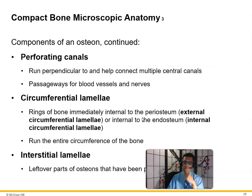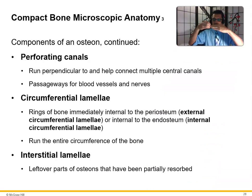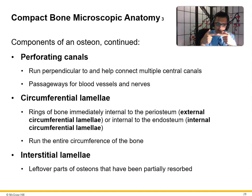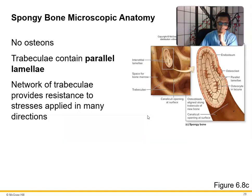Perforating canals run perpendicular to and connect multiple central canals, allowing passage for blood vessels and nerves. Circumferential lamellae are rings of bone immediately internal to the periosteum running the entire circumference to give stability. Interstitial lamellae are leftover parts of osteons that have been partially reabsorbed. Importantly, there are no osteons in spongy bone — trabeculae contain parallel lamellae forming a network that provides resistance to stress applied in many directions.